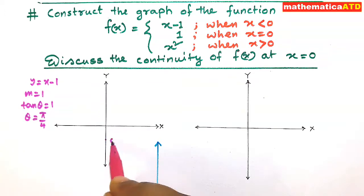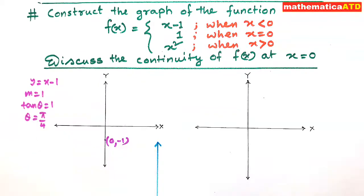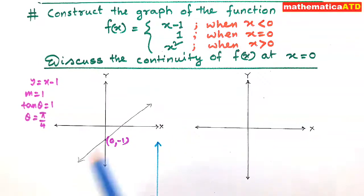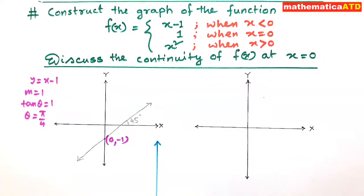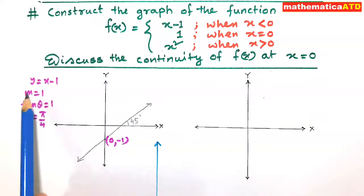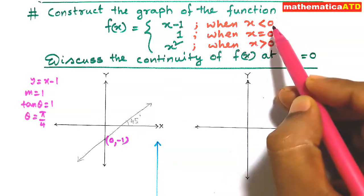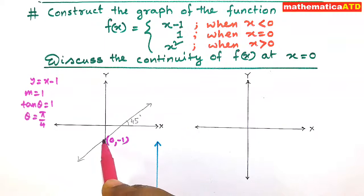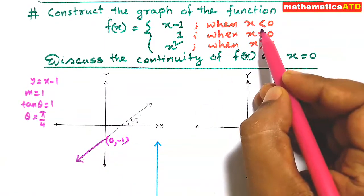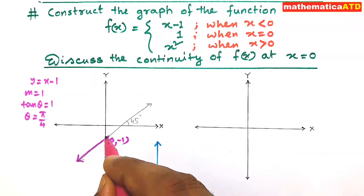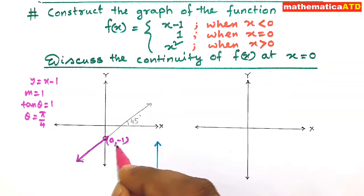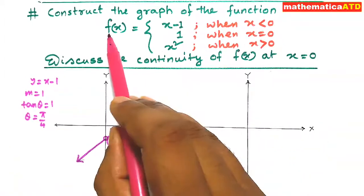If we draw the line y = x minus 1, we find the line is making 45 degrees with the positive direction of the x-axis. Now one thing is very important: what is the domain of this curve? We find that x is less than 0, so the function applies only to this part. Moreover, there is no equal sign — x is not equal to 0 — so we have to discard the point (0, -1) as well. This is the first piece: f(x) = x minus 1.